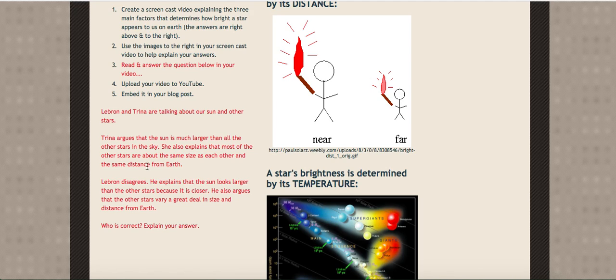So LeBron is correct because Trino says that the other stars are about the same size and the same distance from Earth, but they're actually not.